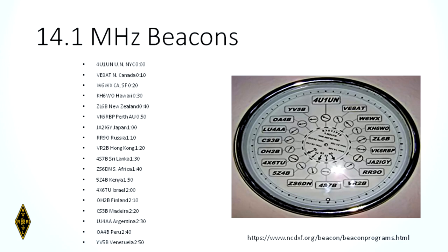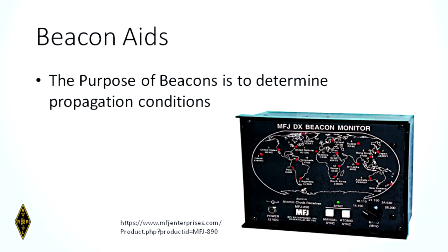There are two beacon stations in the United States: one at the United Nations building in New York City — the call sign is 4U1UN — and one in San Francisco given special authorization by the FCC, operated by the Northern California DX Foundation, which coordinates the worldwide beacons. You may see an MFJ beacon monitor in their catalog — it looks like a radio but it's actually a clock. When a beacon station is supposed to be on the air, the clock will light a little LED and tell you, for whichever band you select, which beacon is transmitting. They'll transmit at 100 watts, then 10 watts, then 1 watt, so you can see how well propagation is.